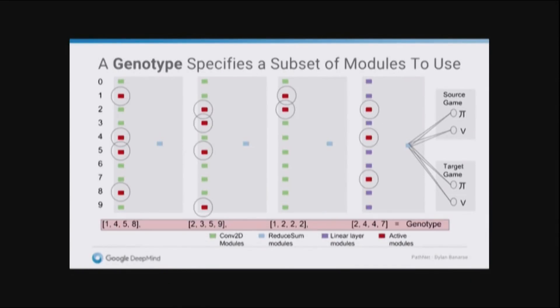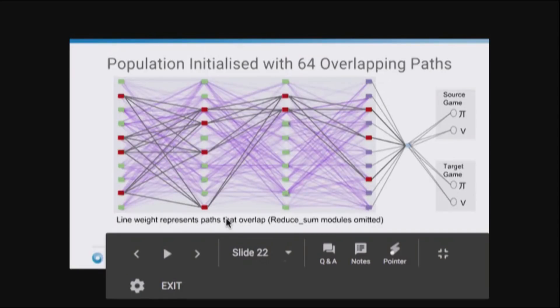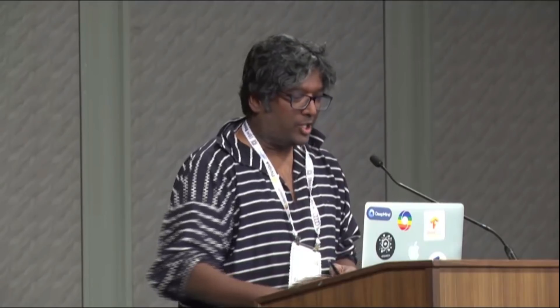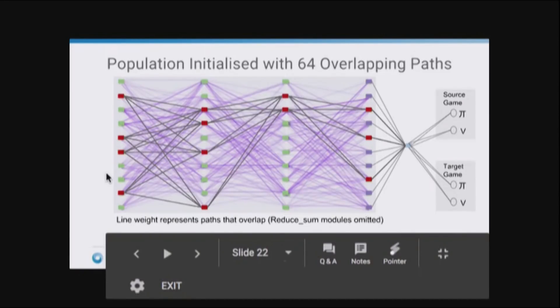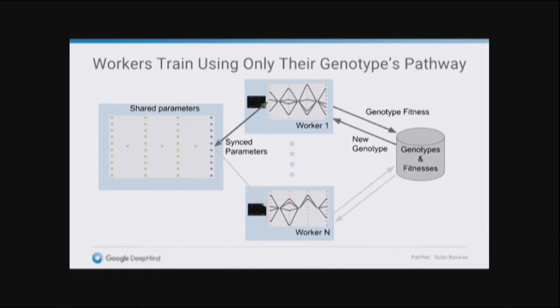How do we choose this subset of modules? We have a population of pathways through the network that are initially randomly generated. And we play a set of episodes of the game with one pathway. We evaluate the fitness of that pathway, which is the performance of that set of parameters on that game. These pathways are just views onto the same set of parameters. There's just one set of parameters. And each worker, so we have a distributed setup where it's basically A3C. We have like 64 workers, each playing their own copy of the game and updating this one shared set of parameters. But each worker has its own genotype, which tells it which subset of the big network it's going to use to control its agent.